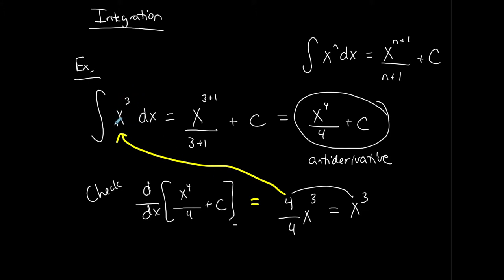In other words, you're starting with the derivative and you want to determine the function whose derivative is this. That constant of integration is very important because it means there are infinitely many different functions whose derivative is x to the third. c could be any number — x to the fourth over 4 plus 1, or plus 3, would still give a derivative of x to the third.